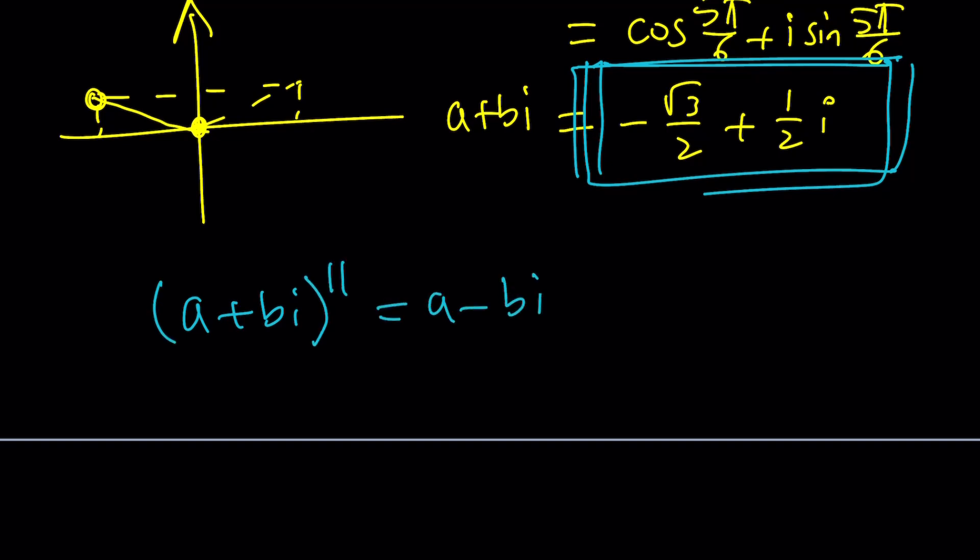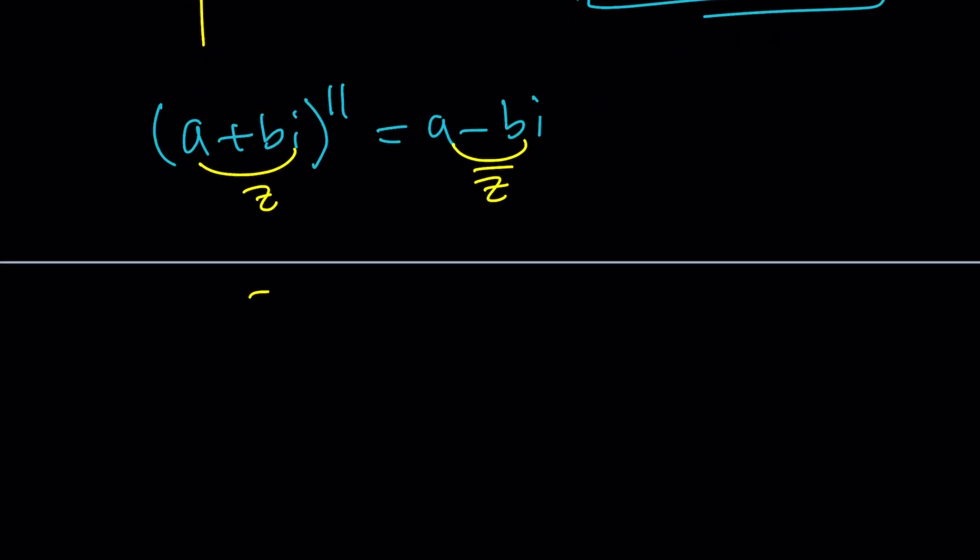We could also do this. You can also do this. Call this z. Then this becomes z bar. So now you have z to the eleventh equals z bar. Now, even if they didn't tell us a squared plus b squared equals one, would it follow from here? Probably. By the way, this just excludes zero. Z can't be zero because we said the modulus is one. And the modulus for zero is zero. So from here, again, multiplying both sides by z is going to give us the exact same thing. This is going to be the absolute value of z squared. This is going to be z to the twelfth and so on and so forth. Get the idea?